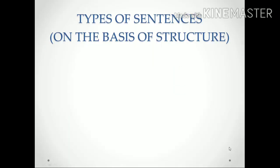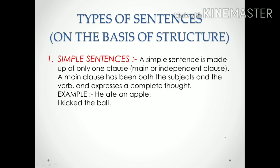Next, types of sentences on the basis of structure. First, simple sentences: a simple sentence is made up of only one clause — which is the main or independent clause. A main clause has both a subject and a verb and expresses a complete thought. Examples: 'He ate an apple.' and 'I kicked the ball.'